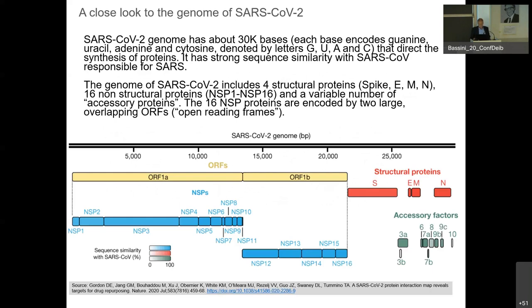The genome is just 30,000 bases encoded by the letters G, U, A, and C — very small compared to the human genome. It can be broken down at the protein level with only four structural proteins: S, E, M, and N; about 16 non-structural proteins; and other accessory proteins. It is relatively simple from the point of view of analysis. Think that the human genome has 20,000 genes.